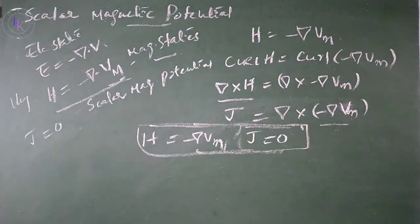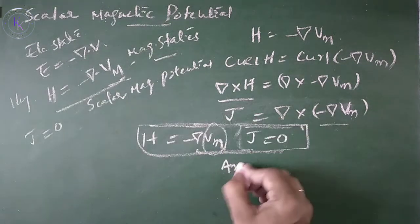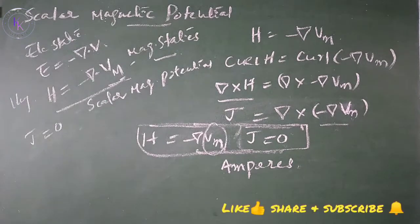Vm has units of amperes. The scalar magnetic potential Vm is applicable to the field due to permanent magnets.